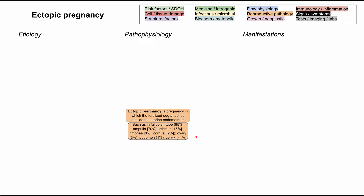The ampulla makes up 70%, the isthmus makes up 15%, the fimbriae is 8%, and the cornual is 2%. Outside of the fallopian tube, you can have an ectopic pregnancy in the ovary — that's 3% of cases — in the abdomen like in the peritoneal space, that's 1% of cases, and less than 1% of cases makes up ectopic pregnancies in the cervix.